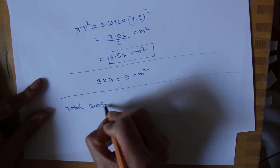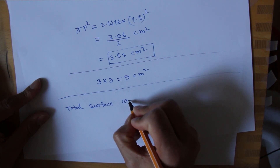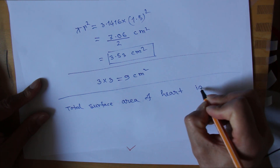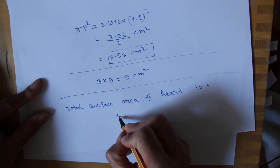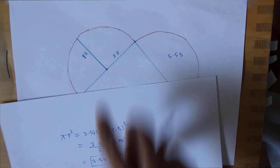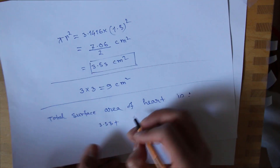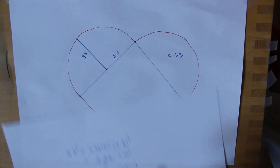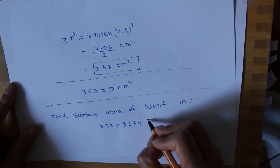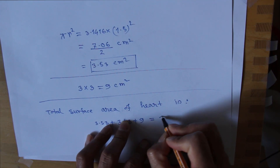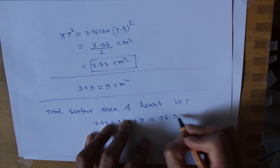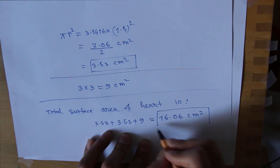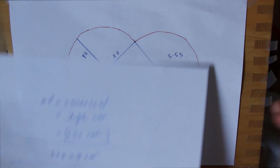The total surface area of the heart: 3.53 plus 3.53 plus 9, which equals 16.06 centimeter squared. Yes, this is the value of the surface area. Is it not simple?